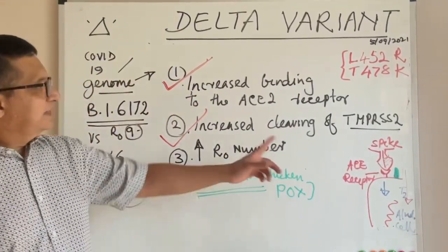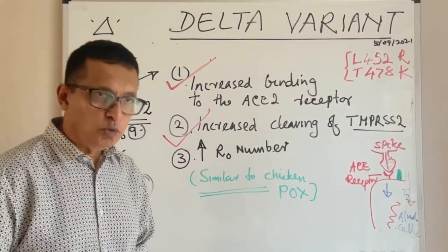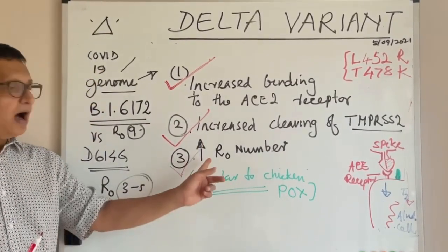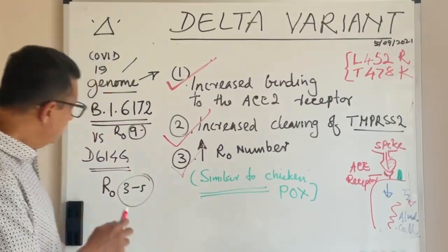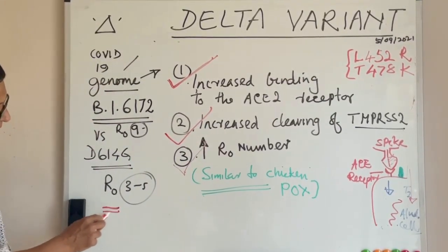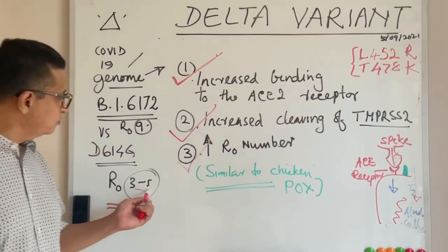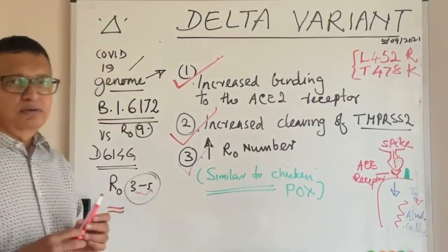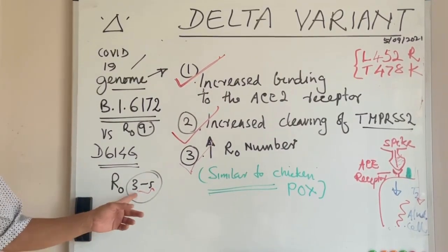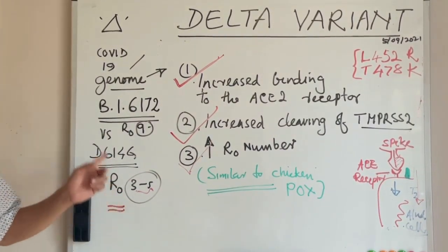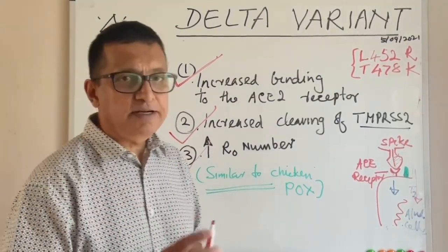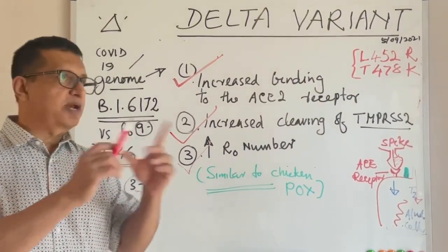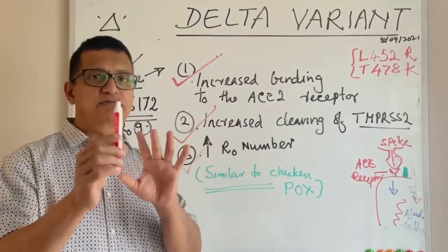The third reason is the R number — the reproductive number. The R number for the original Wuhan variant is 3 to 5, similar to the common cold. That means when one person gets infected with the original Wuhan COVID-19 virus, that person spreads the disease to two to five persons.